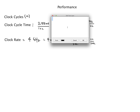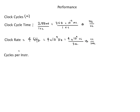Then we have cycles per instruction, abbreviated CPI. CPI is literally how many clock cycles it takes to execute an entire instruction. In the single cycle case, CPI is one. In the pipeline it depends on the instruction: a load word takes five cycles, while an R-type only takes four because it doesn't need to access memory.